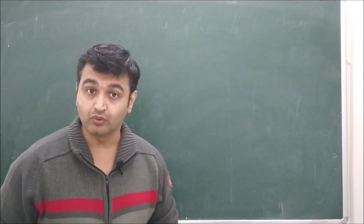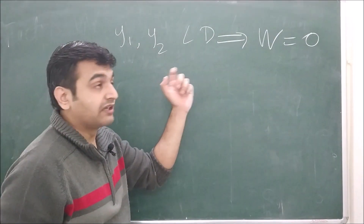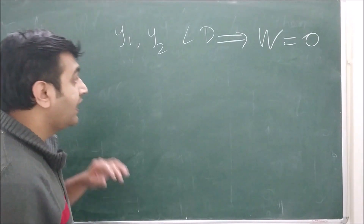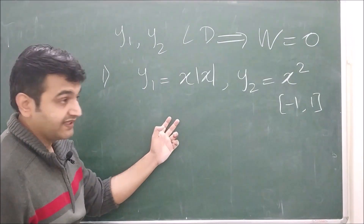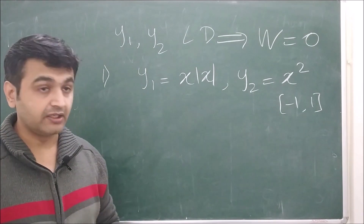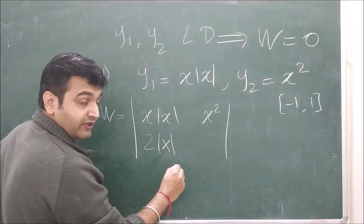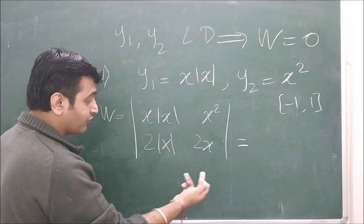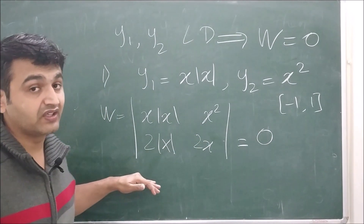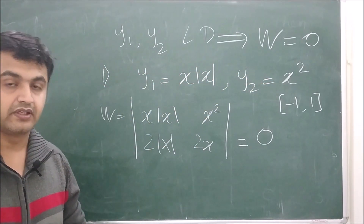Now, is the converse true? If the Wronskian is zero, are the functions necessarily linearly dependent? The answer is no. A counterexample: y1 = x|x| and y2 = x² over the interval (−1, 1). The Wronskian is the determinant of [[x|x|, x²],[2|x|, 2x]], which equals zero, yet the two functions are not linearly dependent over this interval.